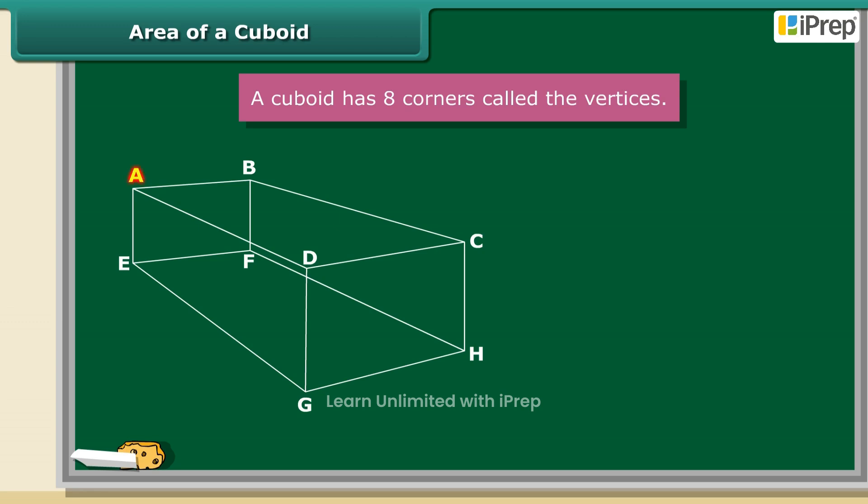A, B, C, D, E, F, G, and H are the vertices of the cuboid. Let AB be b, AE be h, and AD be l.